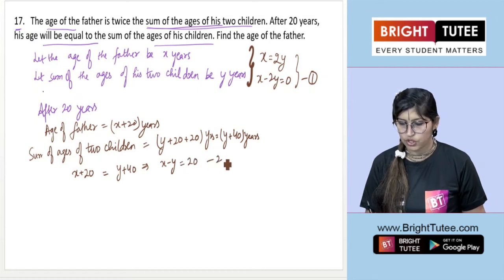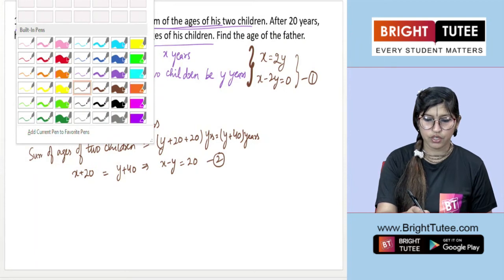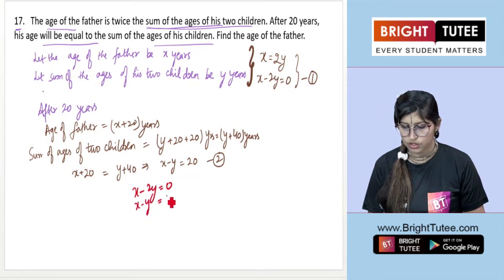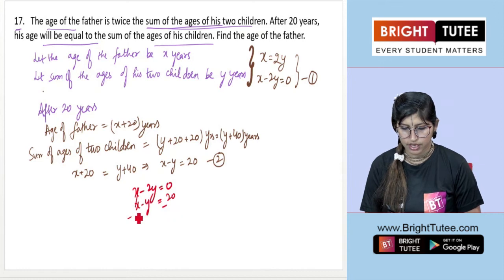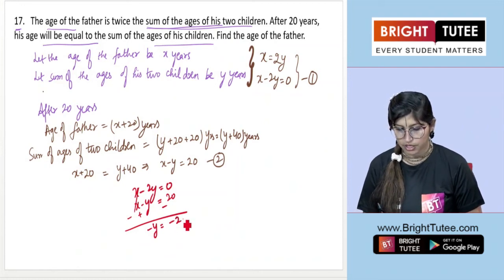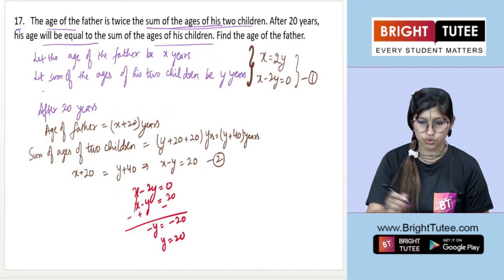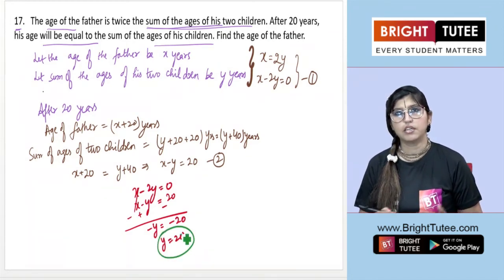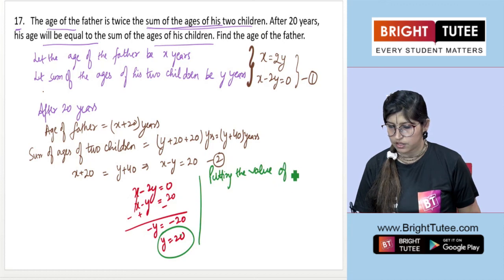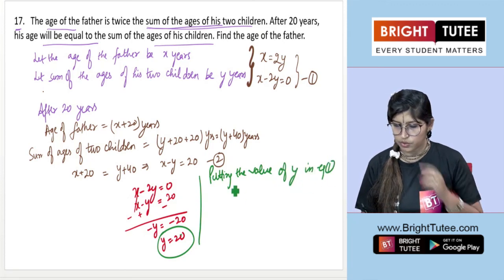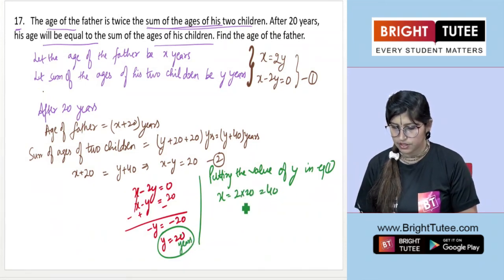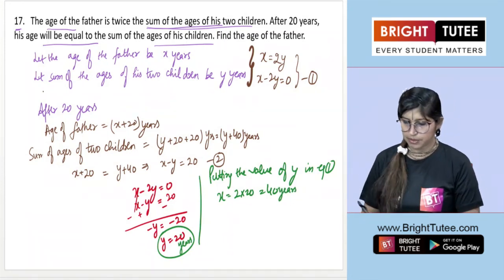We have x minus 2y equals 0 and x minus y equals 20. Subtracting the second equation from the first: cancelling x, we get minus 2y plus y equals 0 minus 20, so minus y equals minus 20, giving y equals 20. Putting y equals 20 into Equation 1: x equals 2 times 20, so x equals 40 years.